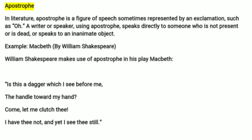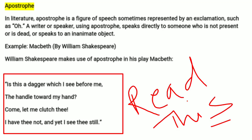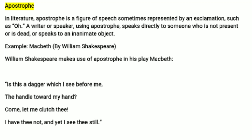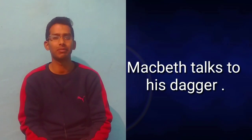Let's take an example from Macbeth. William Shakespeare makes use of epistrophe in his play Macbeth: 'Is this a dagger which I see before me, the handle towards my hand? Come, let me clutch thee — I have thee not, and yet I see thee still.' In this mental conflict before murdering King Duncan, Macbeth has a strange vision of a dagger and talks to it as if it were a person. Since the dagger is an inanimate object that cannot respond, this is an example of epistrophe.